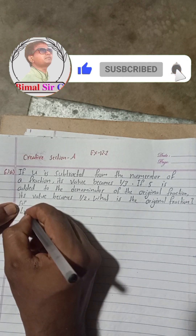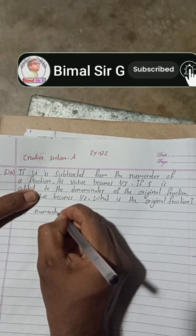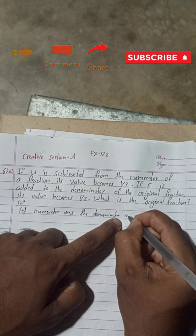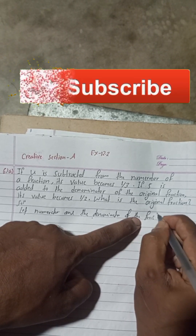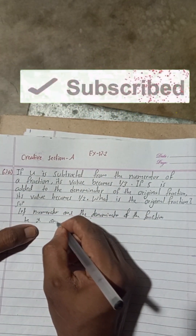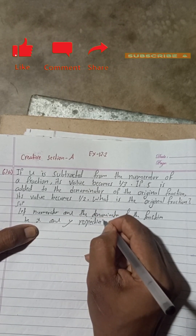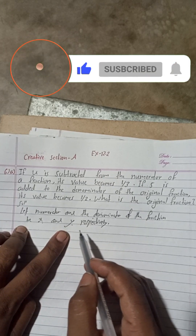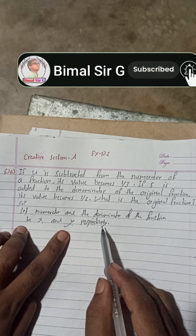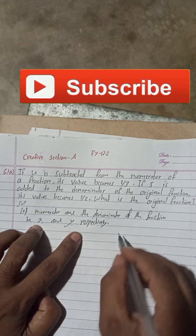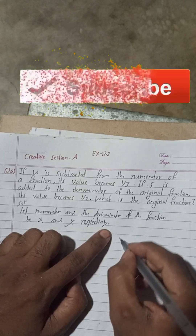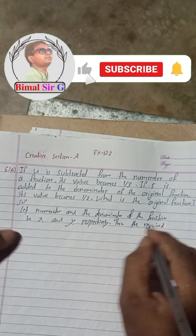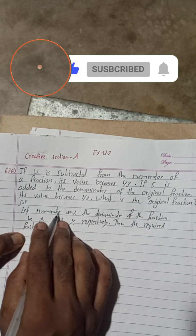Solution: to find the fraction, let the numerator and the denominator of the fraction be x and y respectively. So if we suppose the numerator is x and the denominator is y, then the required original fraction is x/y.